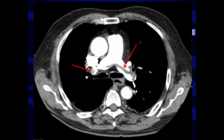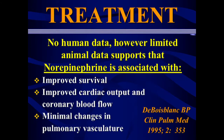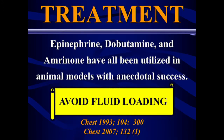There is no human data — only limited norepinephrine data from pig lab models showing improved survival, improved cardiac output, improved coronary blood flow with minimal changes in pulmonary vasculature. Dopamine actually worsens pulmonary vascular resistance, whereas levophed has less effect on the pulmonary vasculature. There are anecdotal studies using epinephrine, dobutamine, and amrinone with some success, but avoid fluid loading for these patients.